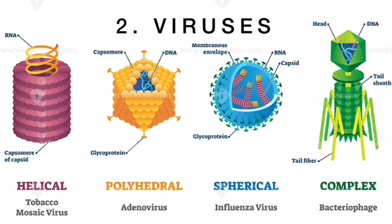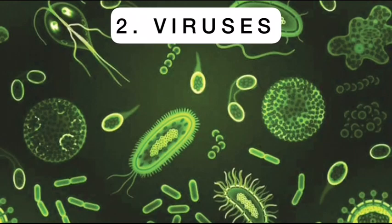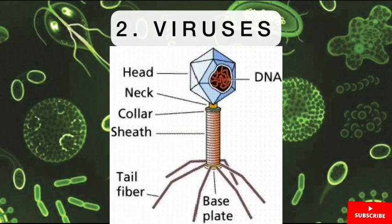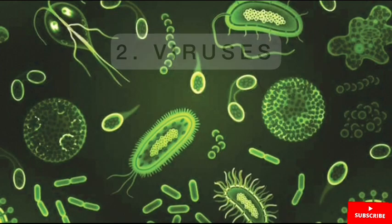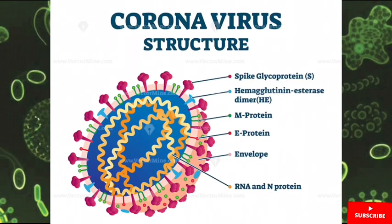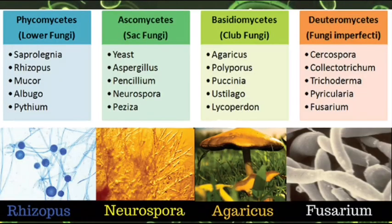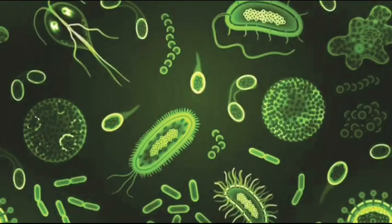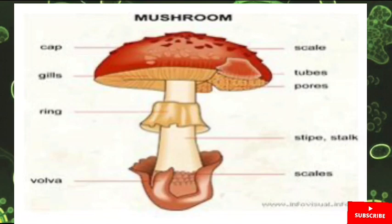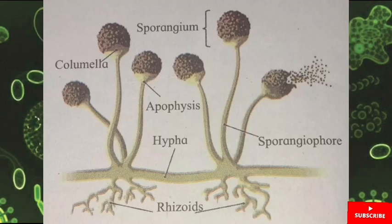Viruses are organisms which become active or living only when they are in a living host. On position number three we have the fungi, which are classified as follows: we have the Phycomycetes, with an example being Rhizopus; there are Ascomycetes, with an example being yeast; the Basidiomycetes; and the Deuteromycetes. We can see the picture of some commonly known fungi such as yeast, the mushroom, and the commonly known bread mold.